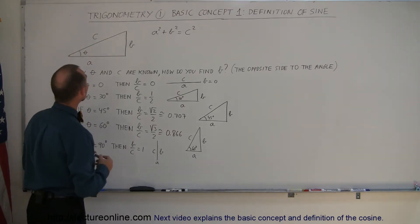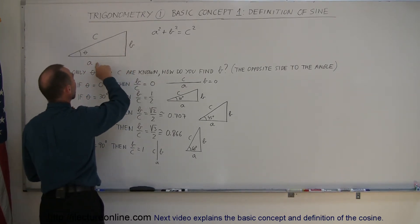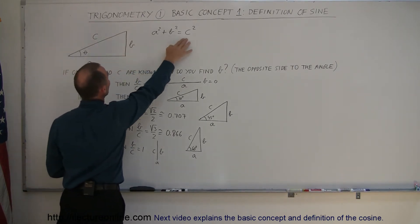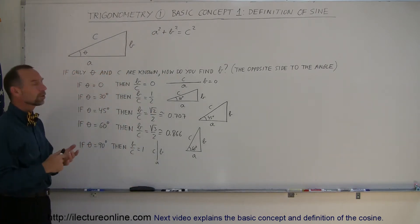Using Pythagorean theorem, we know that these two sides, if we square each side and add them together, equals the hypotenuse squared. That's good if you know two of the three sides. But what if you only know one of the sides and the angle between them? How do you find the value of the other side?